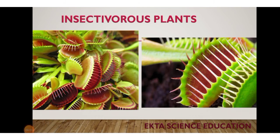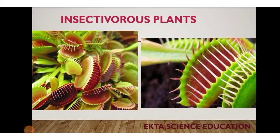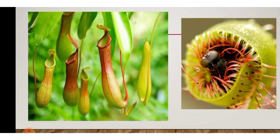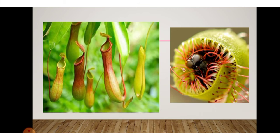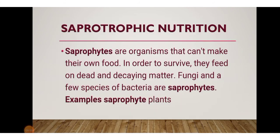Another type is insectivorous plants, like the pitcher plant. When an insect lands in the pitcher plant, the lid closes and the insect becomes trapped inside. The insect is digested by digestive juices secreted by the plant, and its nutrients are absorbed. Such plants are called insectivorous plants — they may not get all required nutrients from the soil, so they obtain extra nutrients from insects.